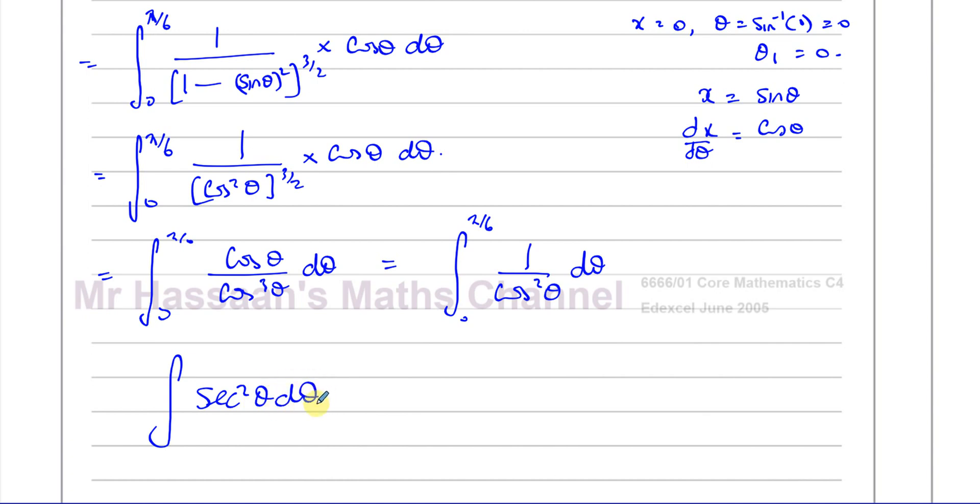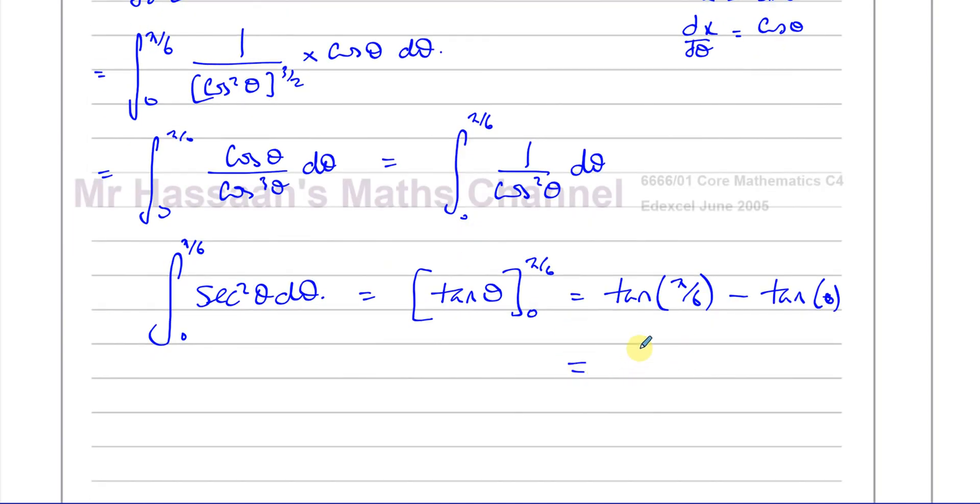And that's going to help us because that's one of our standard integrals that we should know. When you differentiate tan of something, you get secant squared of something. So therefore, the integral of secant squared theta will be tan theta. So this gives you tan theta between pi over 6 and 0. That's going to be the tangent of pi over 6 minus the tangent of 0, which is 0. So tan of pi over 6, that's tan of 30 degrees. This is 1 over root 3, which is going to be root 3 over 3.